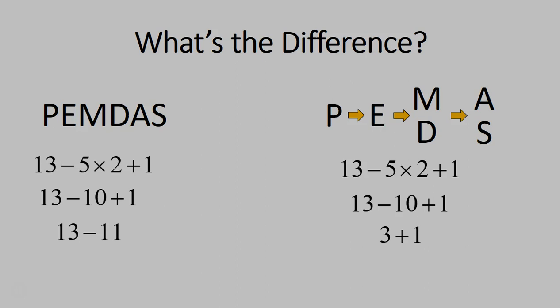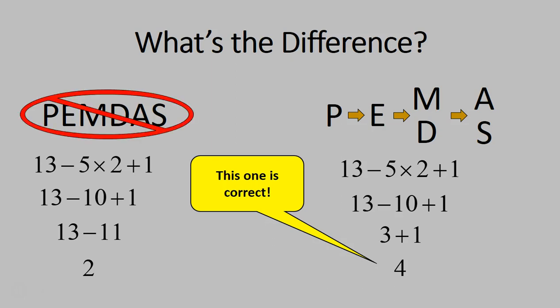And in our final step, on the left, we do 13 minus 11, which gives us 2. And on our right, 3 plus 1, which equals 4. Different answers. That's what the difference is. One of them will give you a correct answer, this guy. And one of them will give you the wrong answer, this guy.